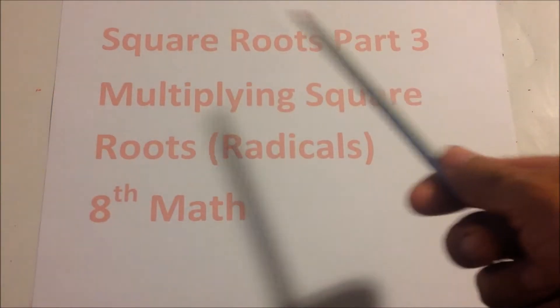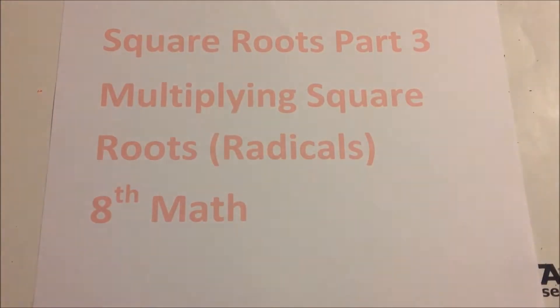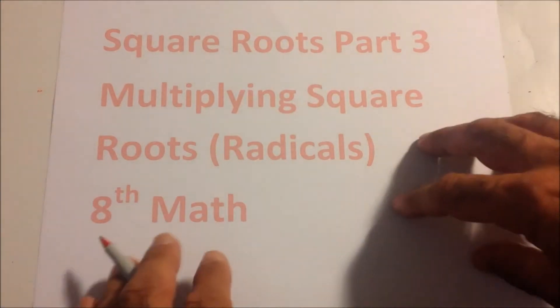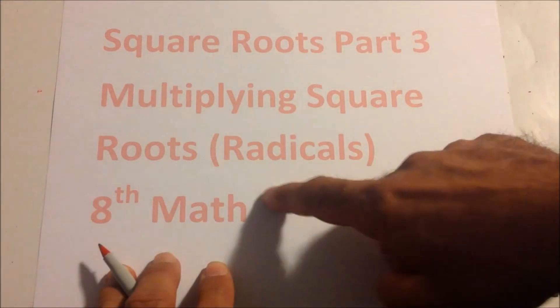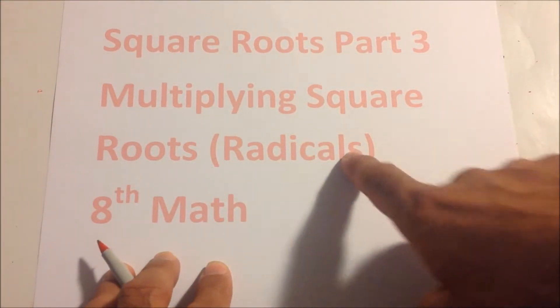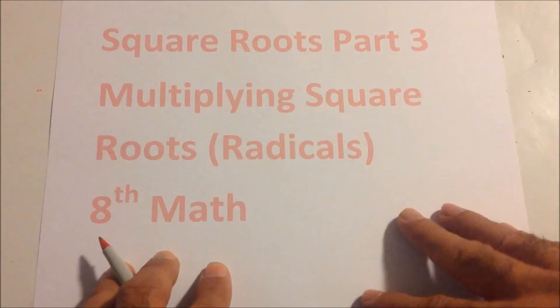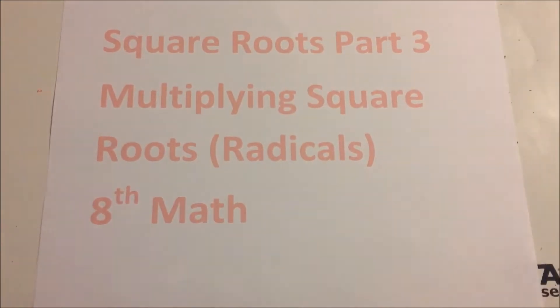Here's part three on square roots. We'll be multiplying square roots. Square roots are also called radicals — that's a new term for us. Radicals is what square roots are called.